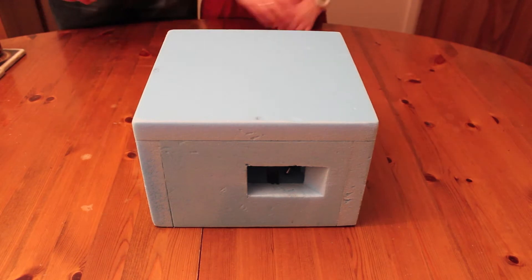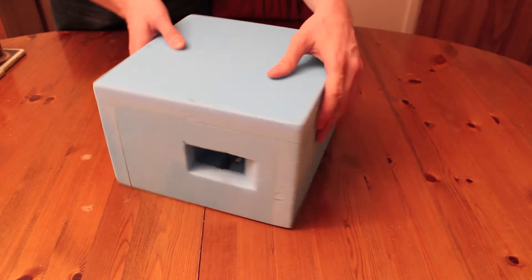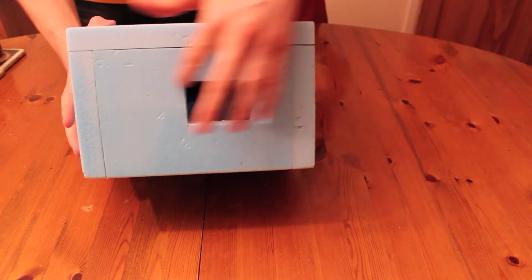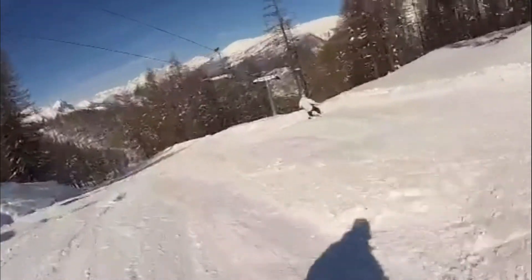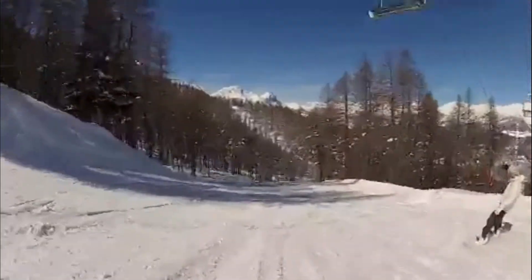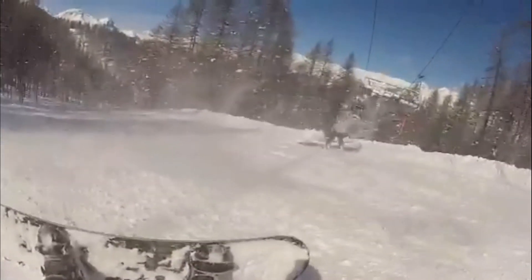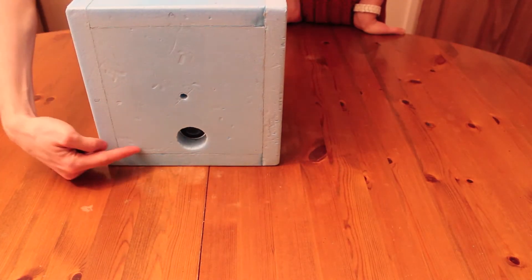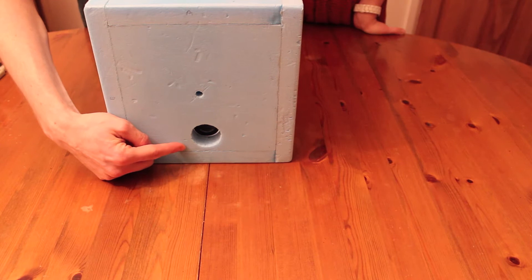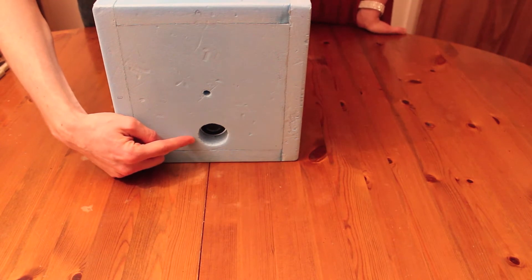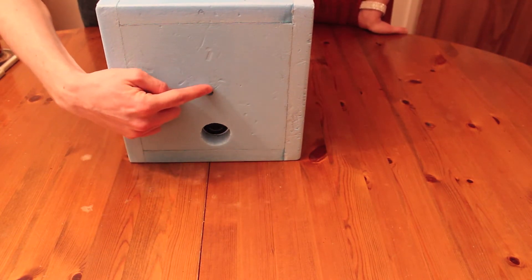On the outside of the box we've got our cutout for our GoPro camera. The GoPro is currently on its skiing holiday in Italy. And underneath we have another cutout for our second camera which you'll see in a minute. And this is the hole for the aerial.